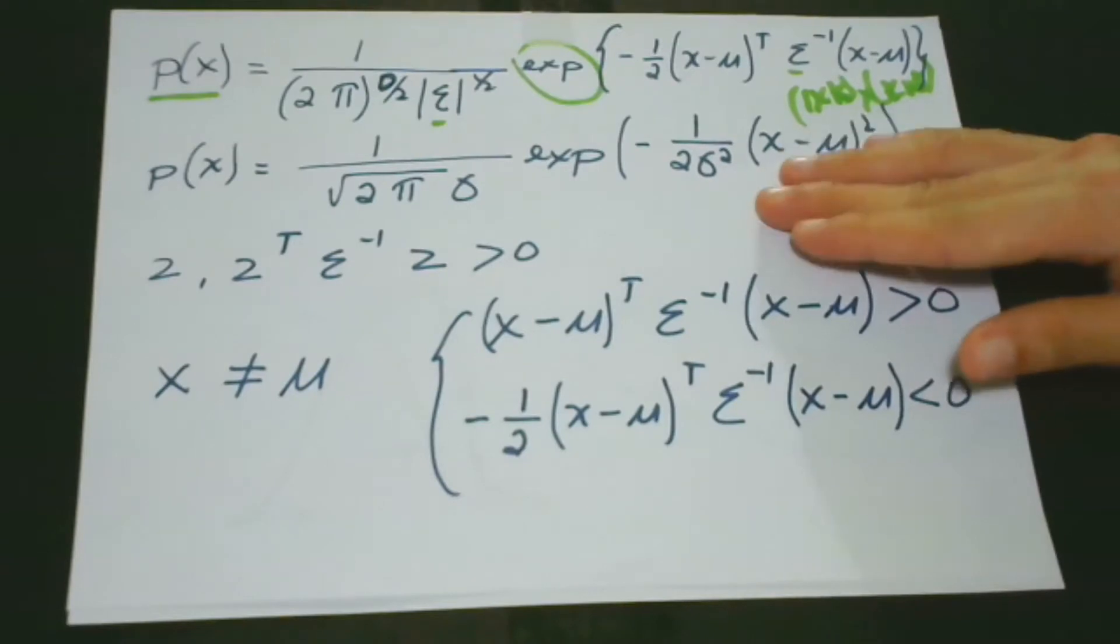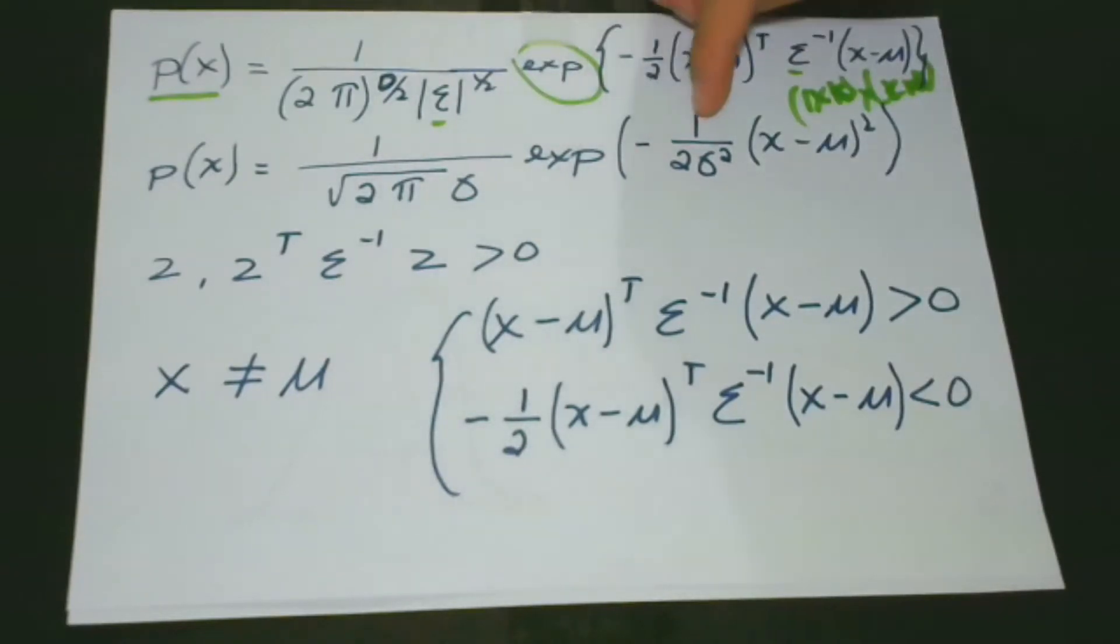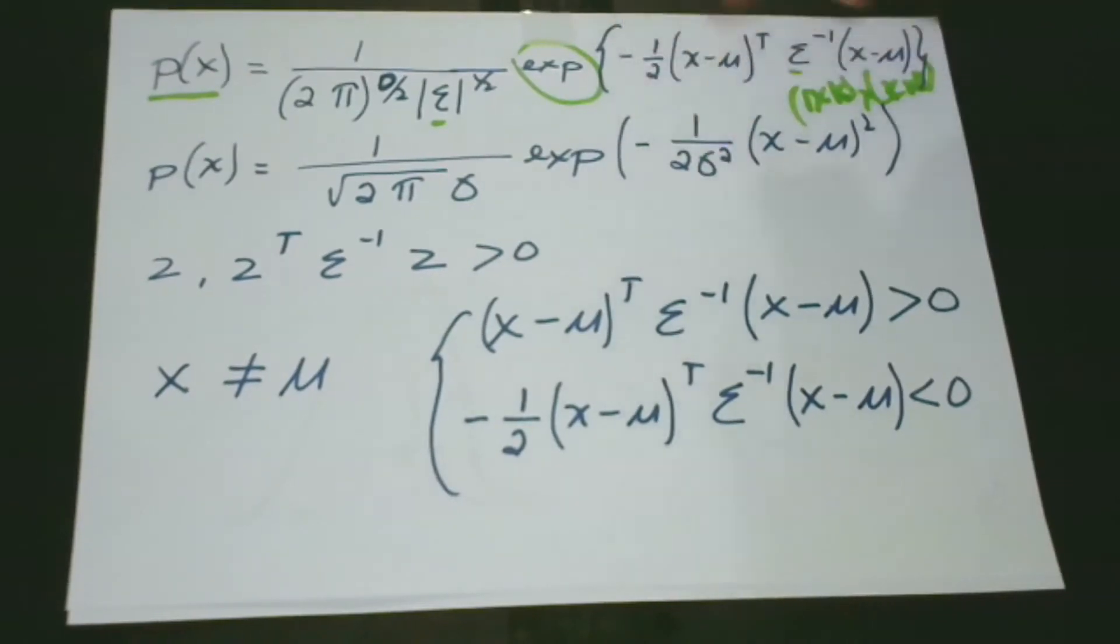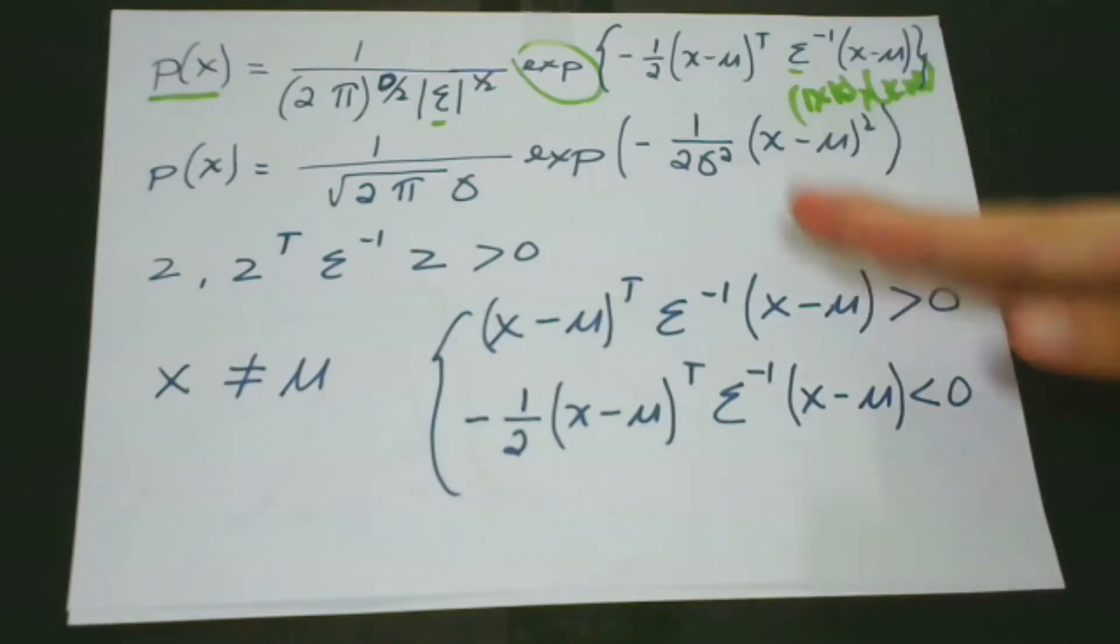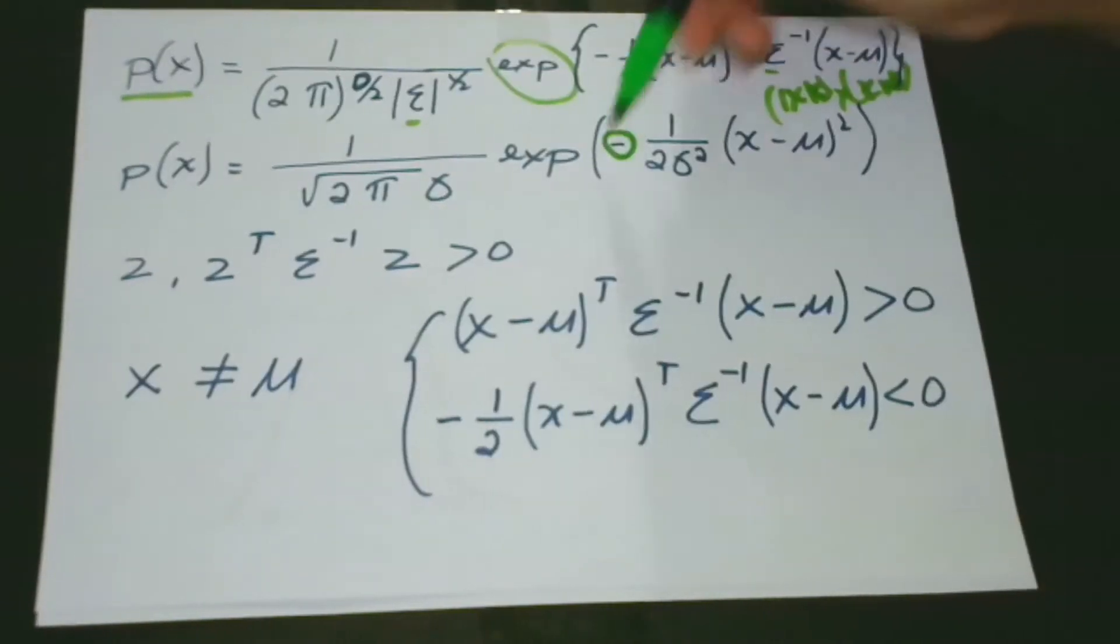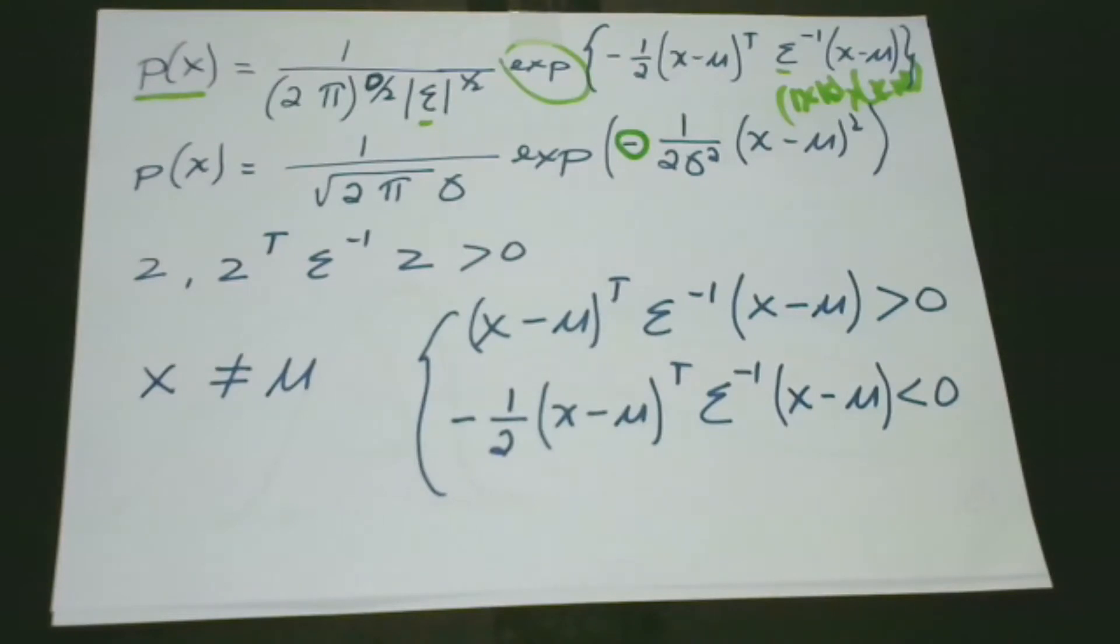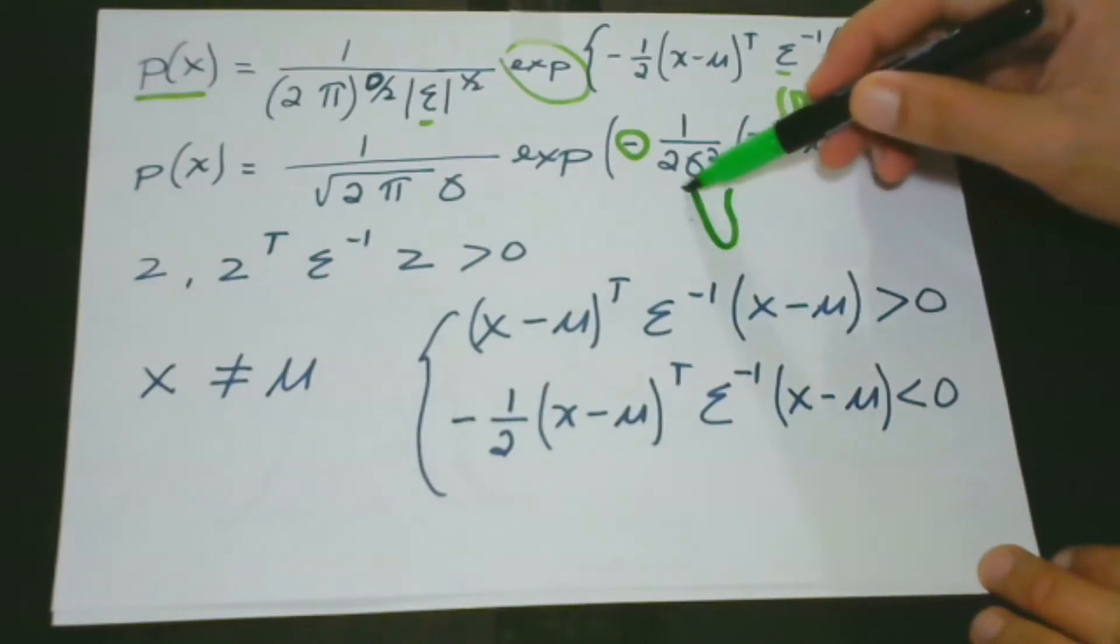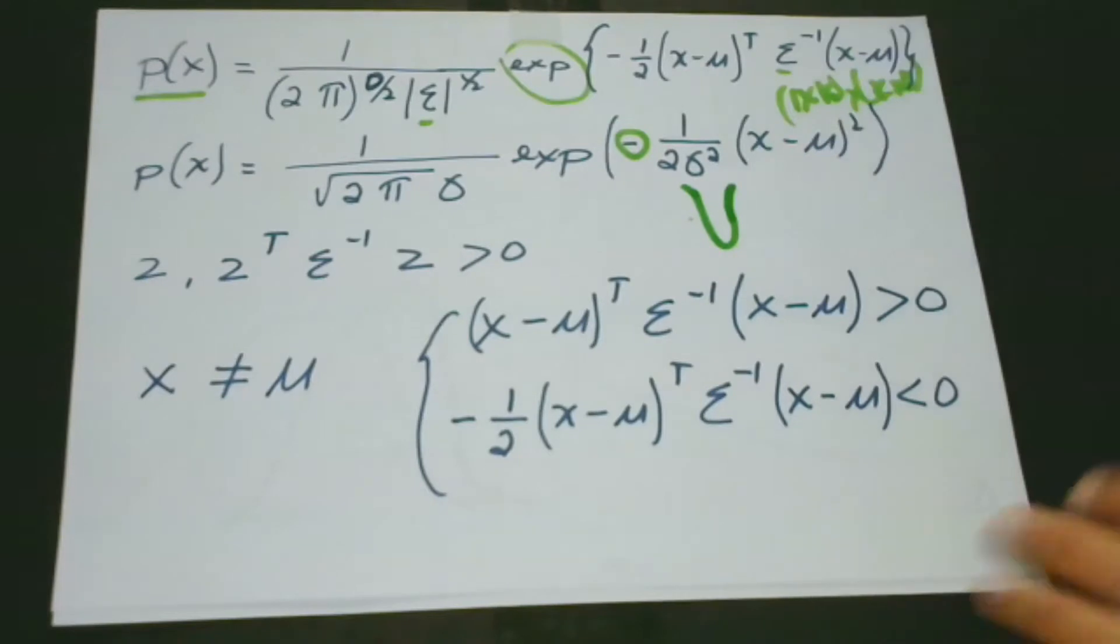So here we can see that negative 1 over 2, then it's an argument of the exponential function. So being a quadratic equation of the variable x. Okay, so because the coefficient is negative, so we have here a negative sign, so we are sure that the parabola is pointing downwards. So it's like this. So this is the parabola that's pointing downwards.